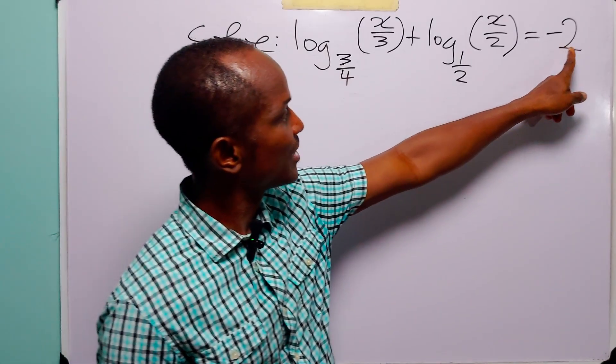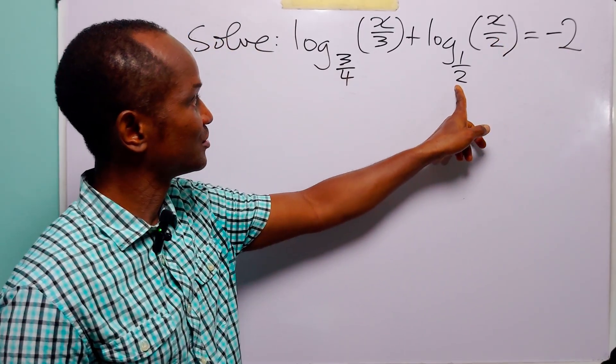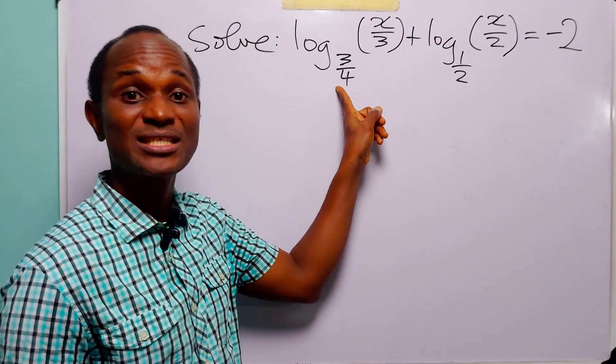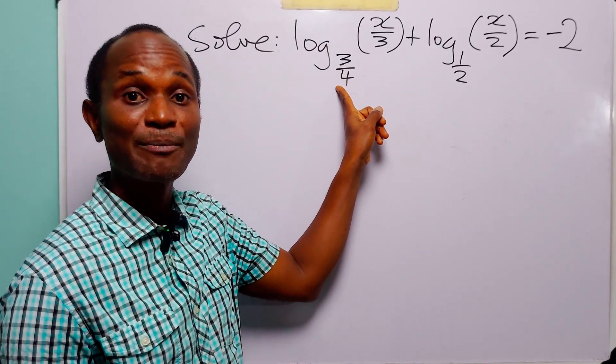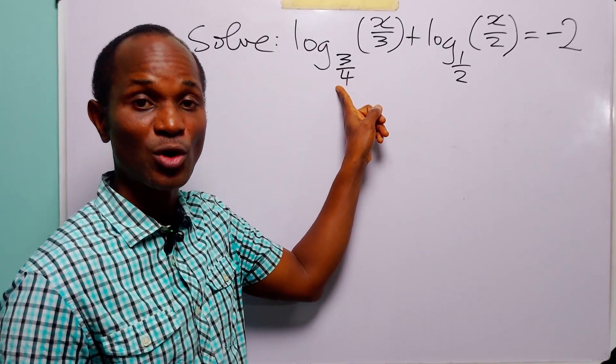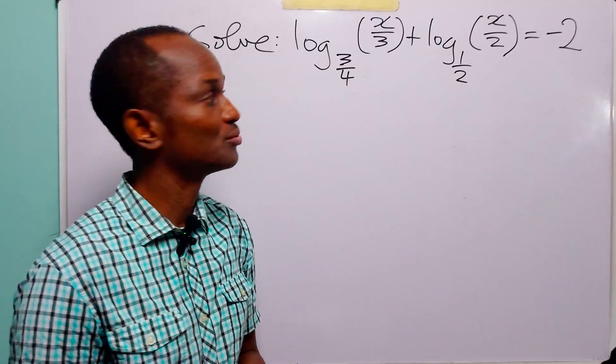Here we have 2, here we have 2, and here we have 2. And this denominator — that is 4 — is a power of 2. So it would be best for us to work in base 2.